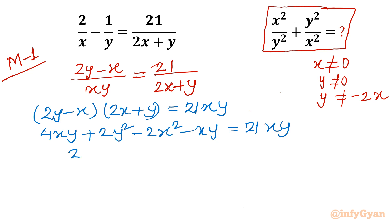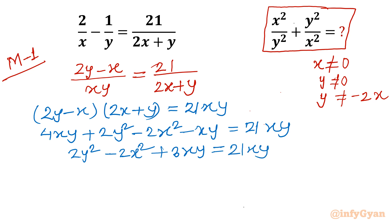Simplifying the left side: 2y² minus 2x² plus 3xy equals 21xy. Taking 3xy to the right, we can write 2y² minus 2x² equals 18xy.